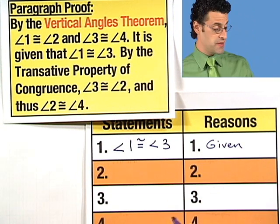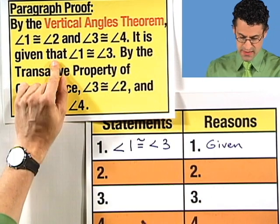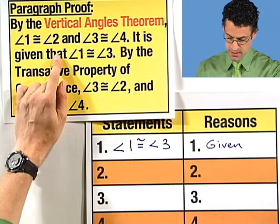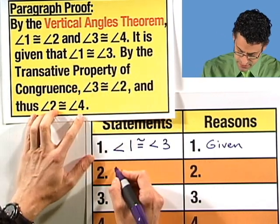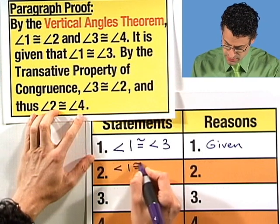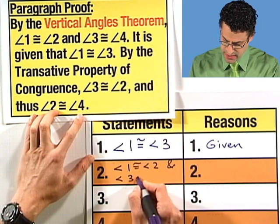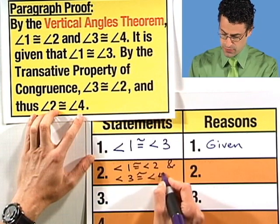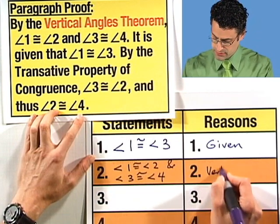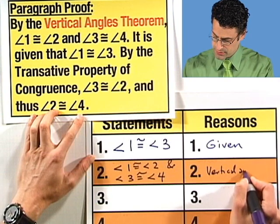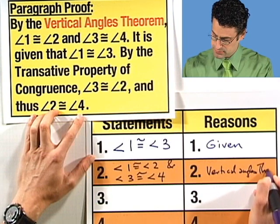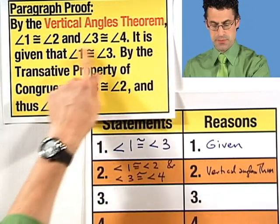Now, what's the next thing I want to use? Well, the next thing I want to use is the fact that these people are vertical angles, so therefore they're congruent. So angle one is congruent to angle two, and angle three is congruent to angle four. And why is this true? By the vertical angles theorem. And that's what was captured here in this sentence.